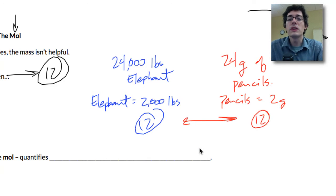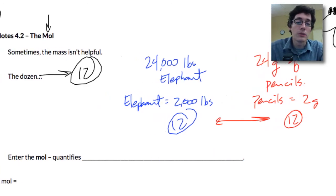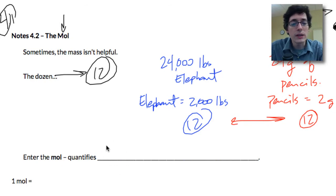So the mass does not always help us and this is where the mole comes in. The mole, it quantifies a number or an amount, a number of physical things.